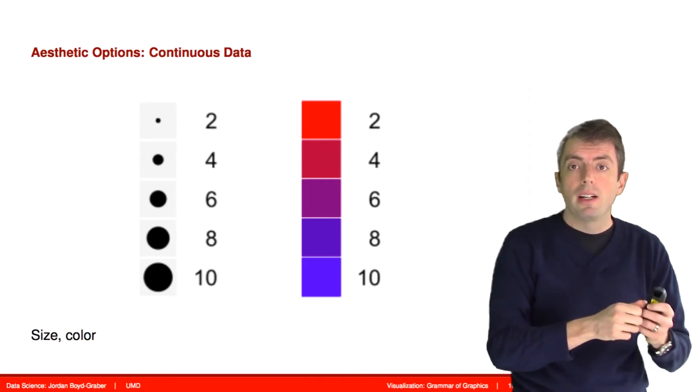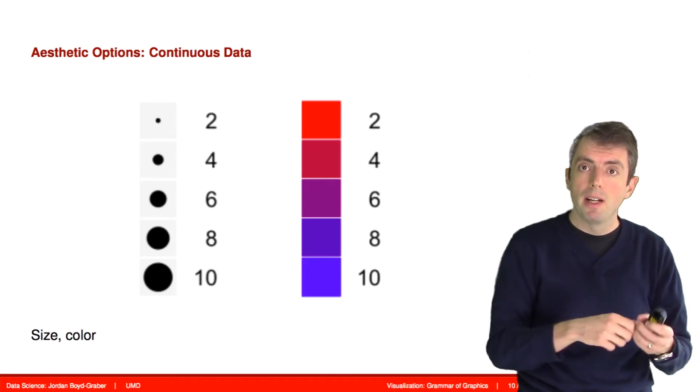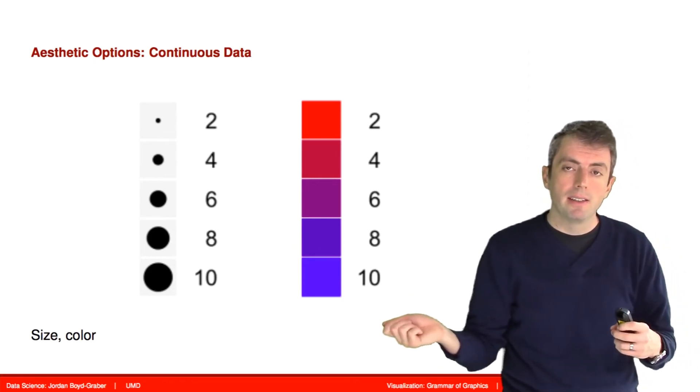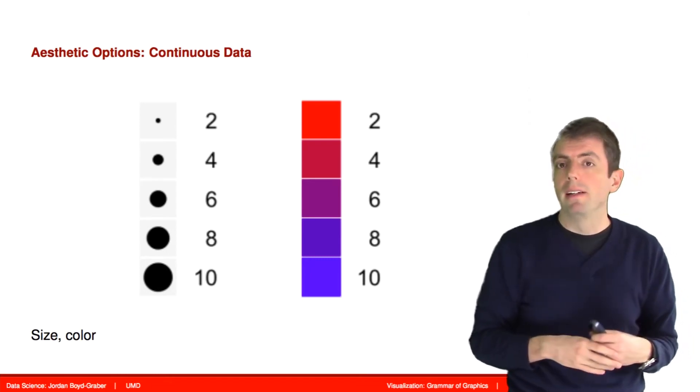If we assign a color to a continuous parameter, then it goes on a spectrum, say for example, from red to blue. The larger the value is, the more blue that it gets. The smaller the value is, the more red it is.